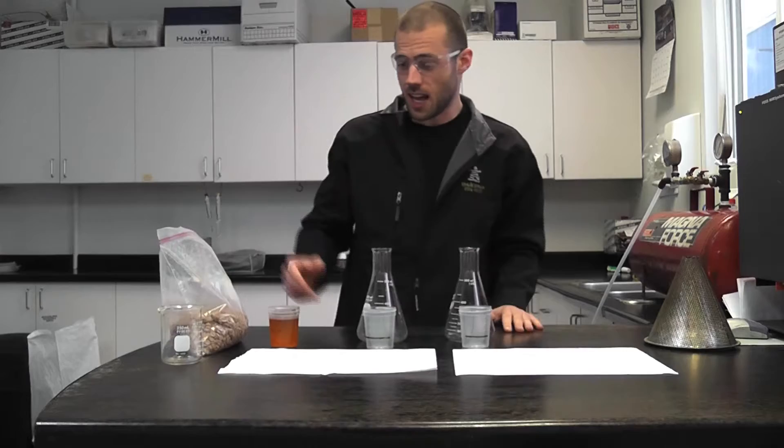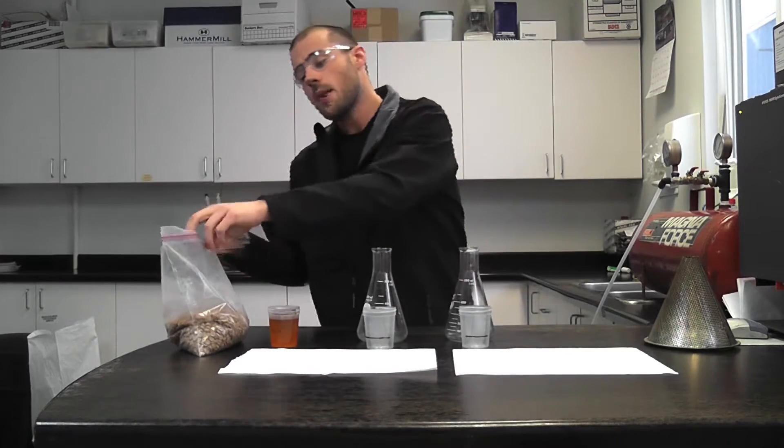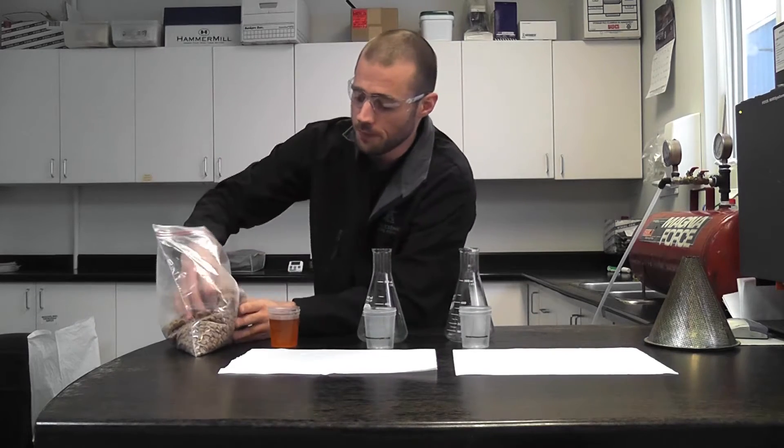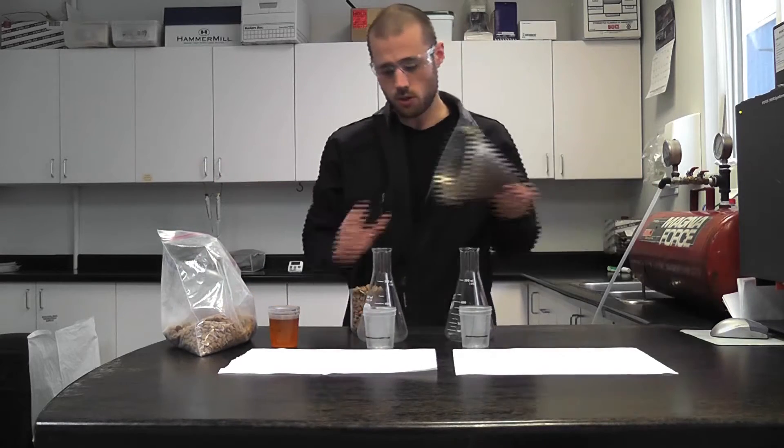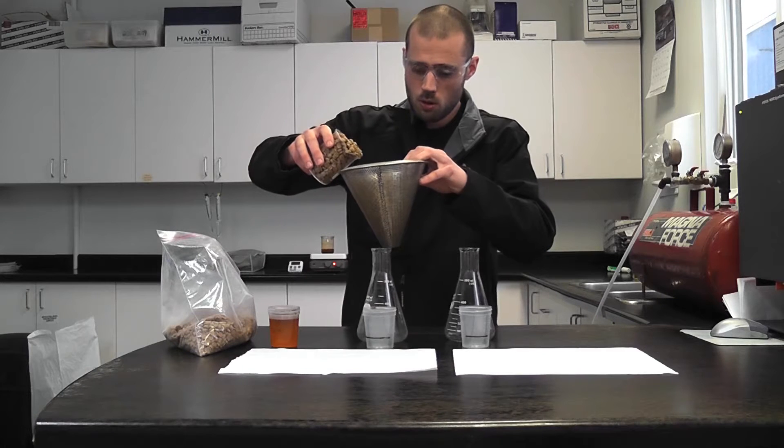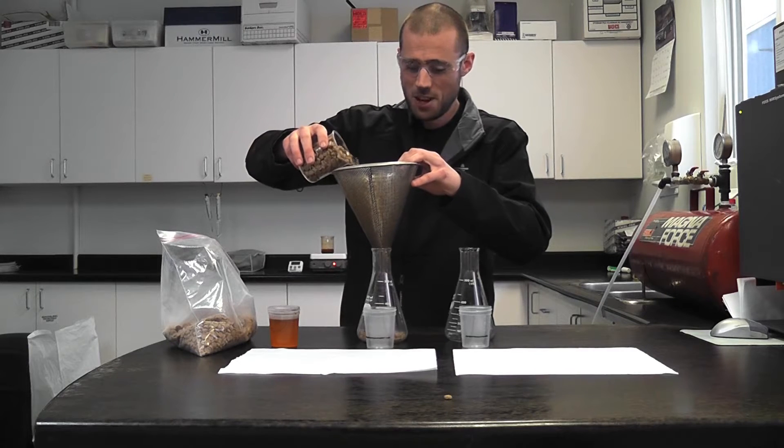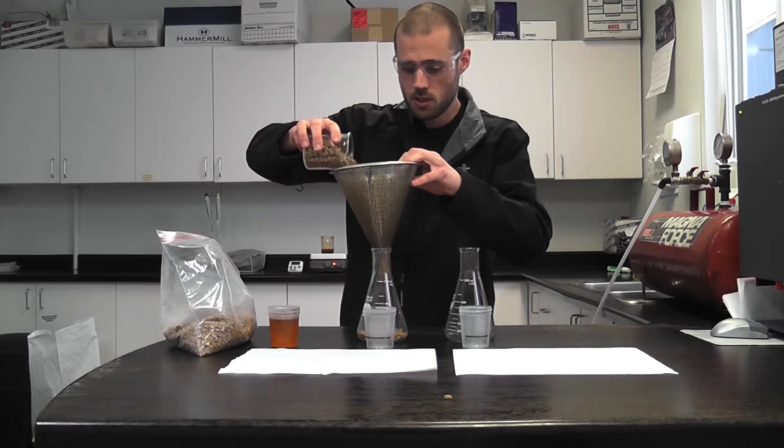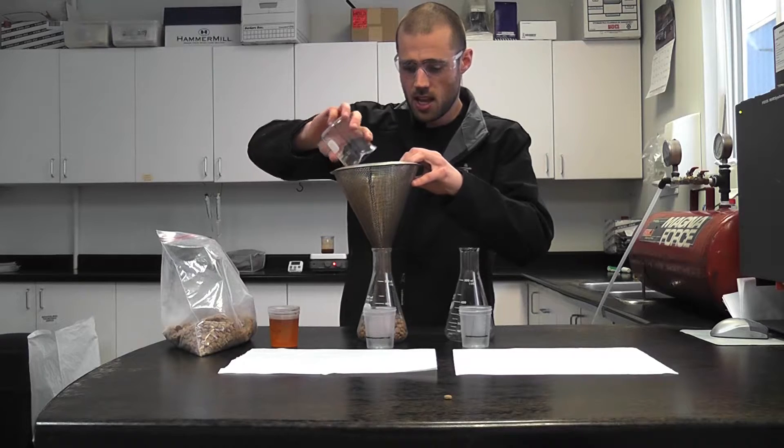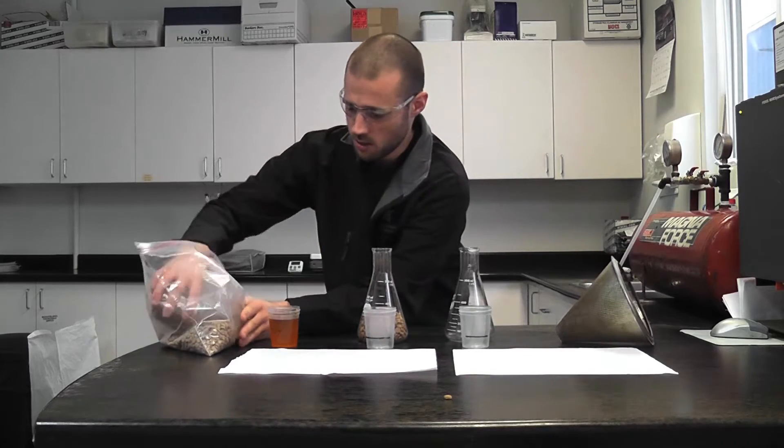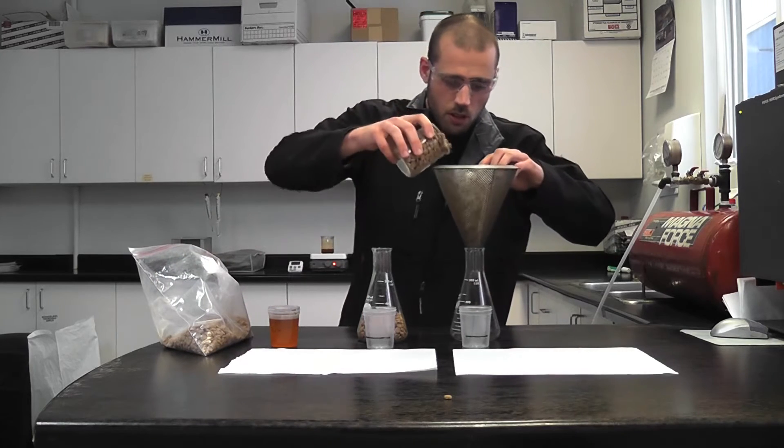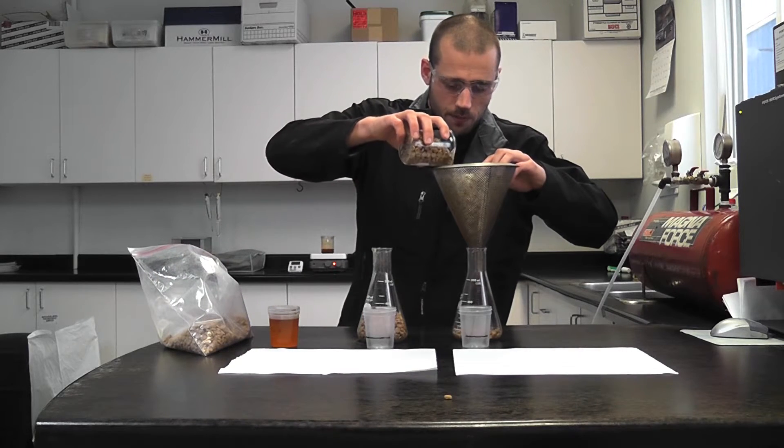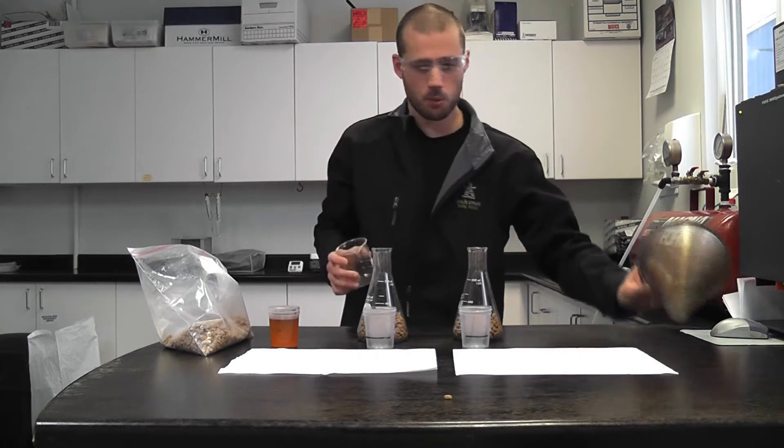We're going to do an experiment. Like any experiment, safety first with the glasses. Now I'm going to add the same amount of dog food to each one of these flasks. So here we go, roughly one beaker full in each. Beaker number one, beaker number two. Okay, perfect.